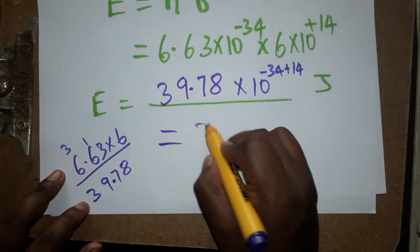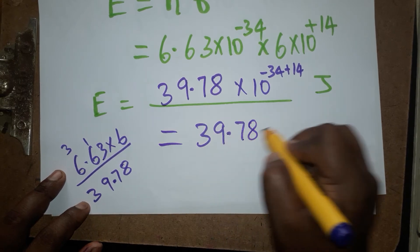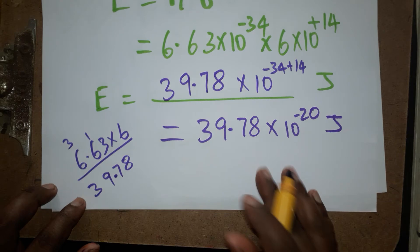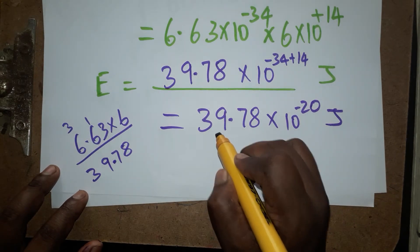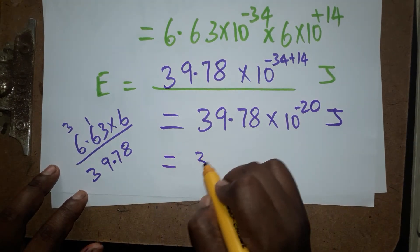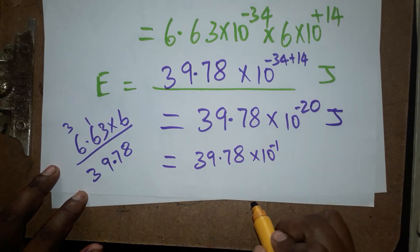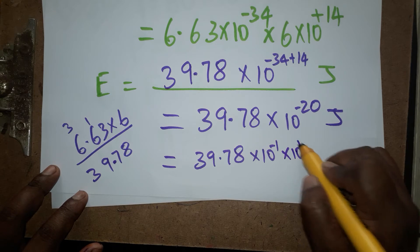The next step we will get 39.78 into 10 power minus 20 joules. What I am going to do now is move this one decimal: 39.78 becomes 3.978 into 10 power minus 1.